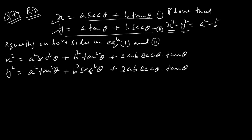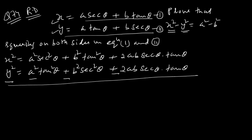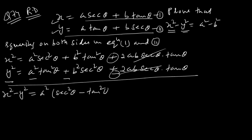अब हमें minus का sign चाहिए, तो minus कर लो। x² minus y² निकालते हैं। a square दोनों में से बाहर दिखाई देता है, a² बाहर लिया। अंदर मिर पास sec²θ minus tan²θ है। फिर minus का b² बाहर लो — b² के अंदर tan²θ minus sec²θ आएगा, जो plus minus से minus हो जाएगा।